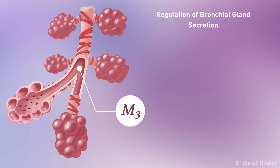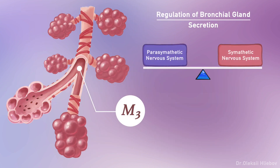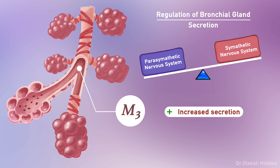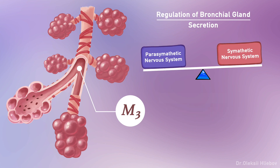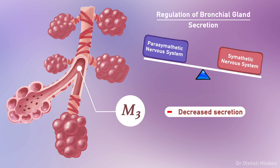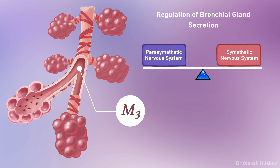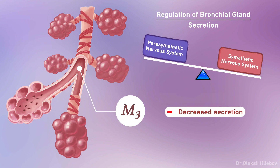But what about bronchial glands? Activation of the parasympathetic nervous system increases gland secretion, and activation of the sympathetic nervous system decreases it. When the sympathetic nervous system becomes active, it decreases the tone of the parasympathetic nervous system, and as a result, less acetylcholine reaches the cholinergic synapses — so less stimulation, less secretion.